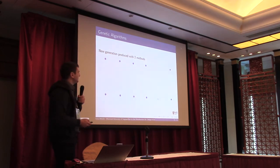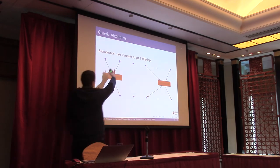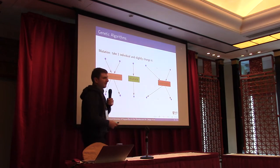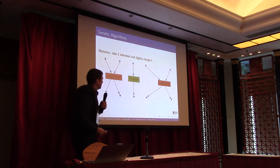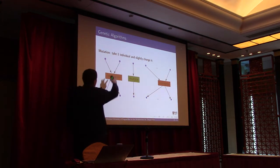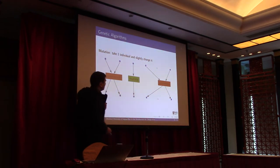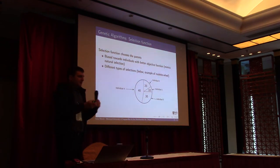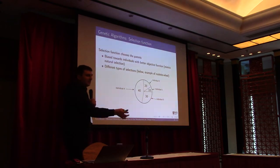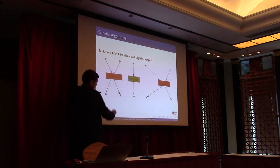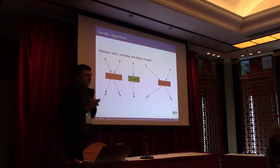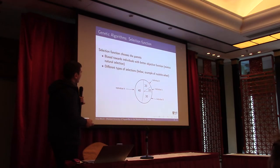New individuals are created using two methods. The first is reproduction: we take two candidate solutions and produce two new candidate solutions. The second is mutation: we take one candidate and produce a new one by slightly changing it. Parents are selected using a selection function biased towards individuals on which the objective function achieves higher values — same as in nature. Inputs with higher objective function values have a higher chance of becoming parents and passing genes to the next generation. Inputs with very low values may never become parents.